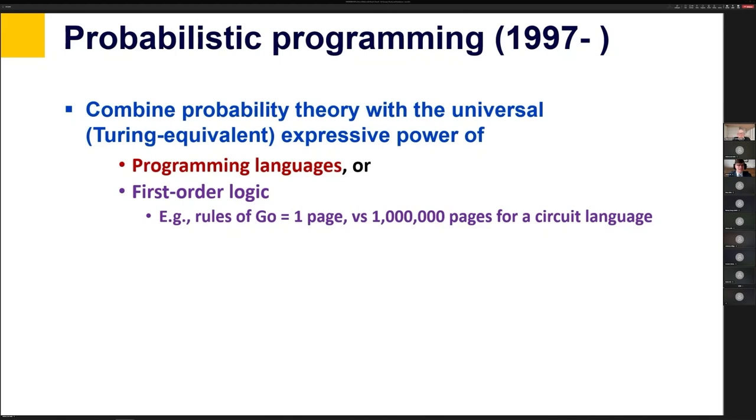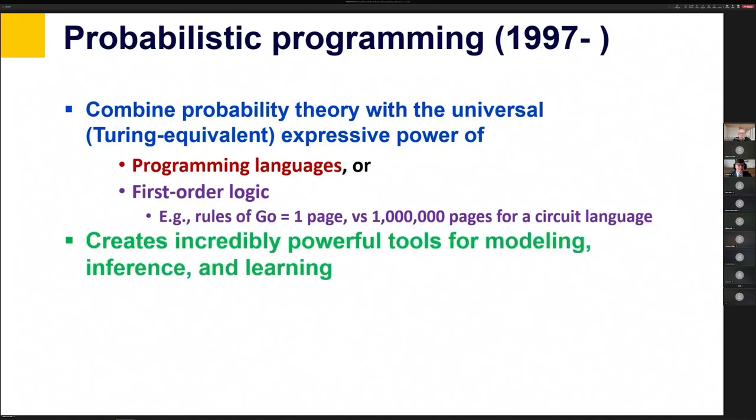And structured representations are what we call Turing equivalent, meaning that if you can represent in one of these structured representations, such as a programming language like Python, or first order logic, then those are sufficiently expressive that they can express anything that you can represent in any formal language. And you can do so relatively concisely. So just to give you an example, if I write down the rules of Go in first order logic, it's less than one page of axioms. If I try to write down the rules of Go in a circuit language, such as a neural network or a Boolean circuit, it might be the representation of the rules would be about a million pages, and they would still be incomplete because in a circuit language, you can't represent the rules of Go for a board of arbitrary size, you can only do it for a fixed size board.